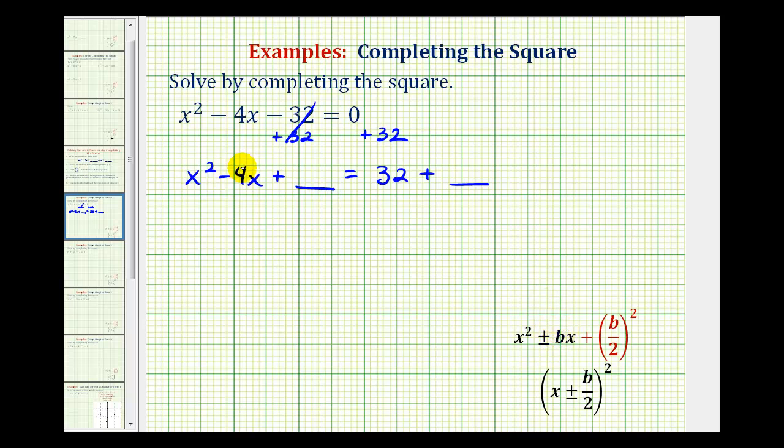Notice here b is equal to negative 4, so b divided by 2 squared would be negative 4 divided by 2, that's negative 2 squared, which is equal to positive 4. So we need to add 4 here on the left, but to maintain equality we also need to add 4 on the right.